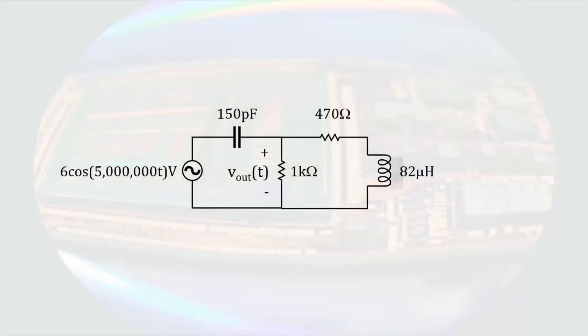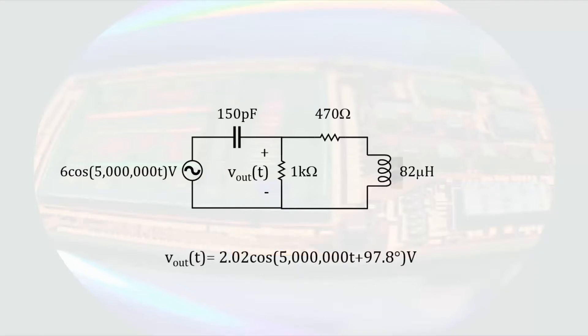Let us remember that at this point we have only determined the phasor voltage. The original problem was to determine the time-dependent voltage, so we need to take this circuit back to the time domain. We determined that the phasor voltage across the 1 kilo ohm resistor was 2.019 e to the j 97.84 degrees volts. One advantage to the polar form of complex numbers is that we already have the magnitude and phase angle of the time domain expression. Remembering that our angular frequency was 5 mega radians per second, the voltage can be written as a magnitude times the cosine of the angular frequency times time plus our phase angle, and our units are volts. With our output voltage expressed in the time domain, this analysis is complete.